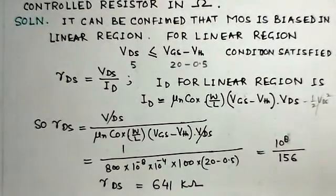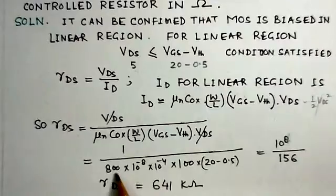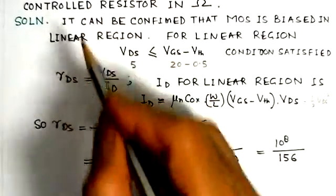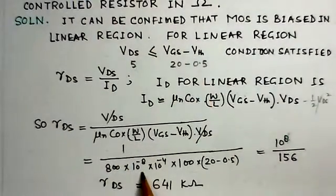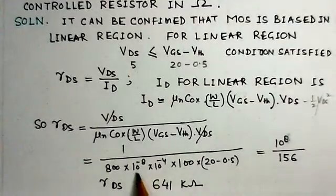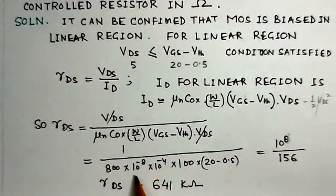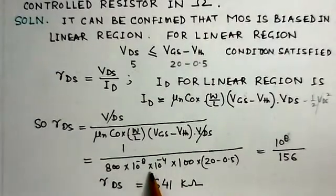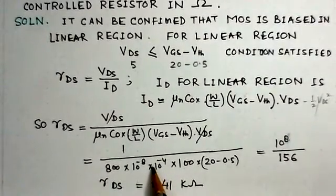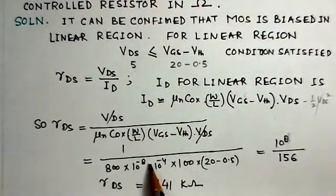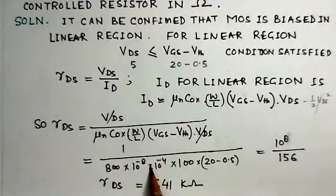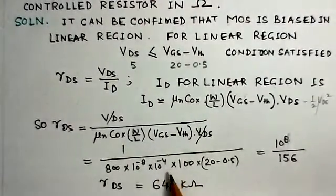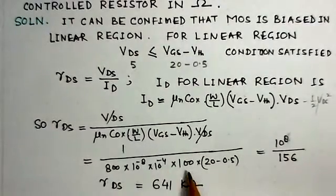μn is given as 800 cm²/V-s, and Cox is 8×10^-8 Farad per meter square. Since Cox is in Farad per meter square, we need to convert to centimeters square, so it becomes 10^-8 × 10^-4.